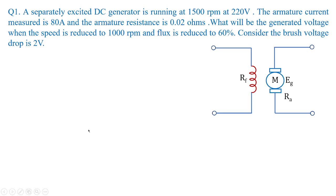Let us start with the first problem. A separately excited DC generator is running at 1500 rpm at 220 volts. The armature current measured is 80 amperes and the armature resistance is 0.02 ohms. What will be the generated voltage when the speed is reduced to 1000 rpm and flux is reduced to 60 percent? We are asked to consider the brush voltage drop of 2 volts.